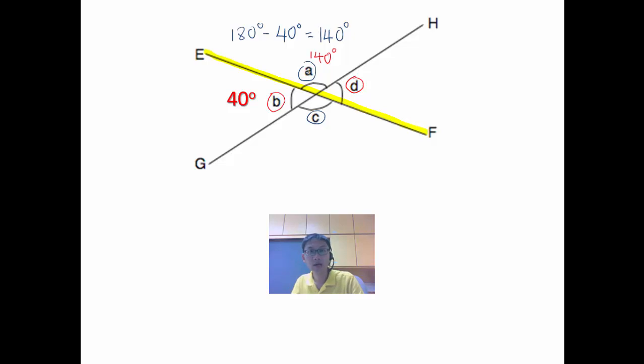Because I know that A is 140, can I go and find D? Yes, I can. So D, again, EF is a straight line, so angles on a straight line is 180 degrees. I have to take 180 minus 140, and that will give me 40 degrees.